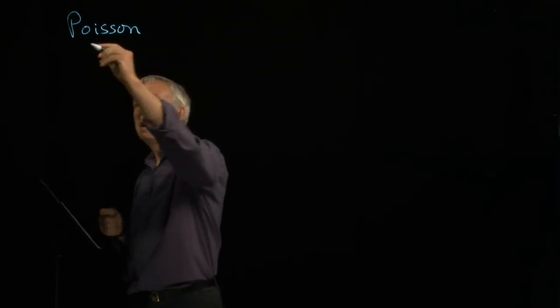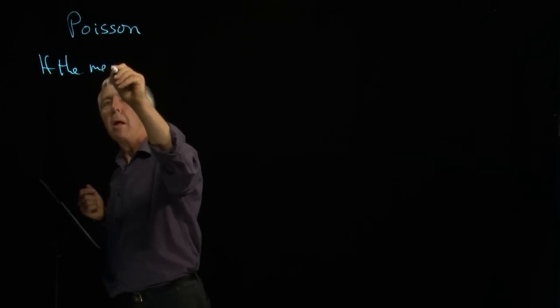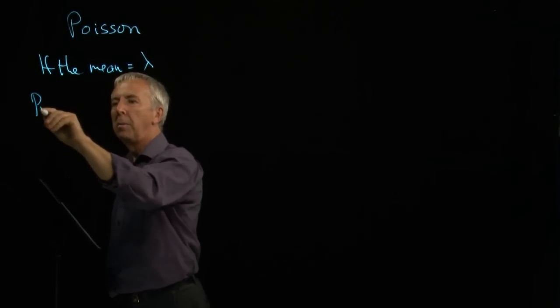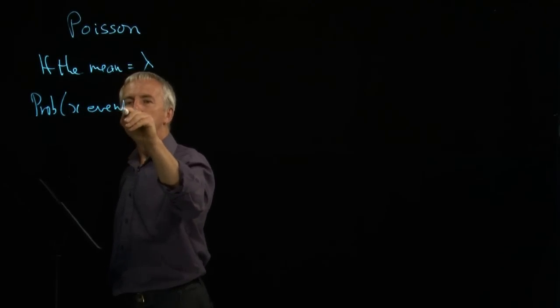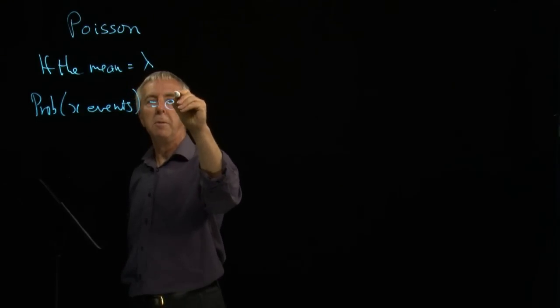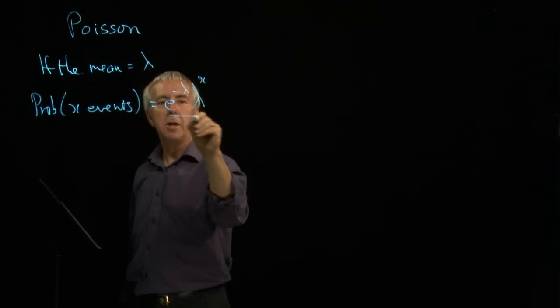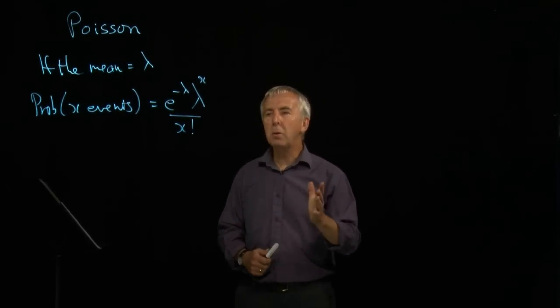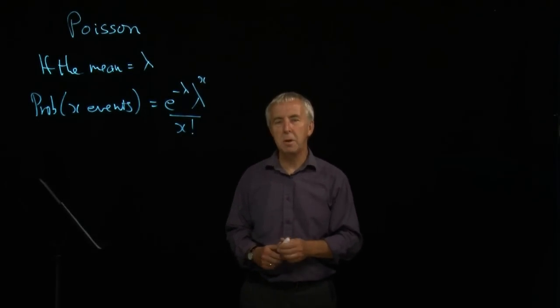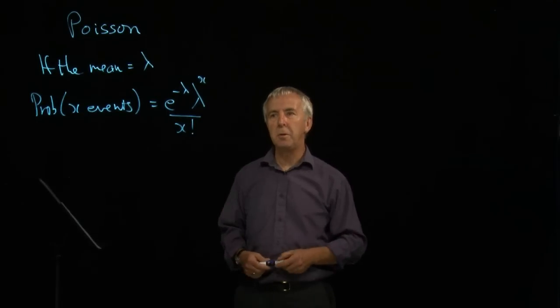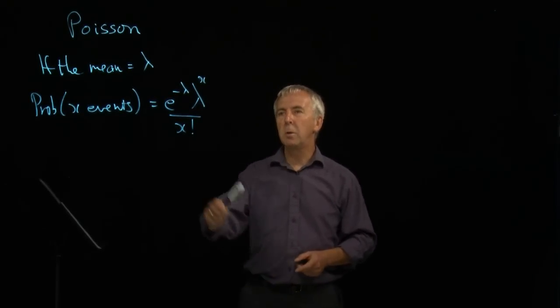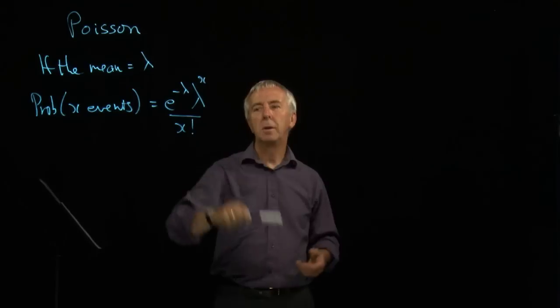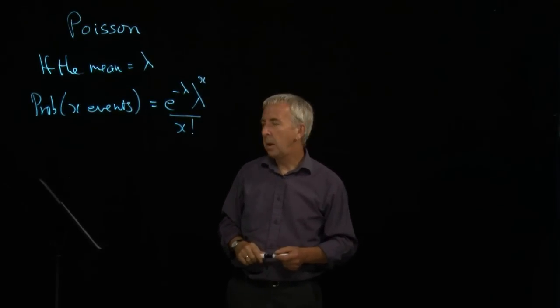The idea is that we have the mean, which is usually called lambda, the Greek letter lambda. Now given that mean, the probability of x events is given by this formula: e to the minus lambda, lambda to the x over x factorial, where e is the mathematical constant, about 2.718. It's a bit like pi, a fixed number used a lot in maths. Let's have a look at an example.